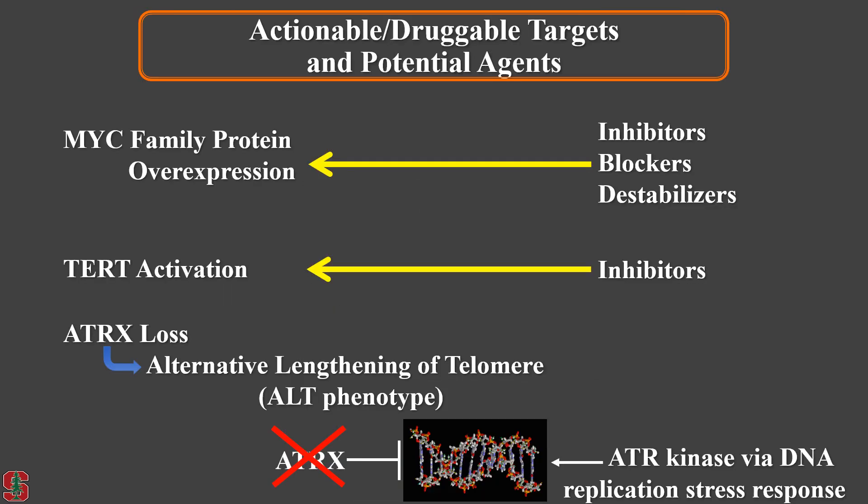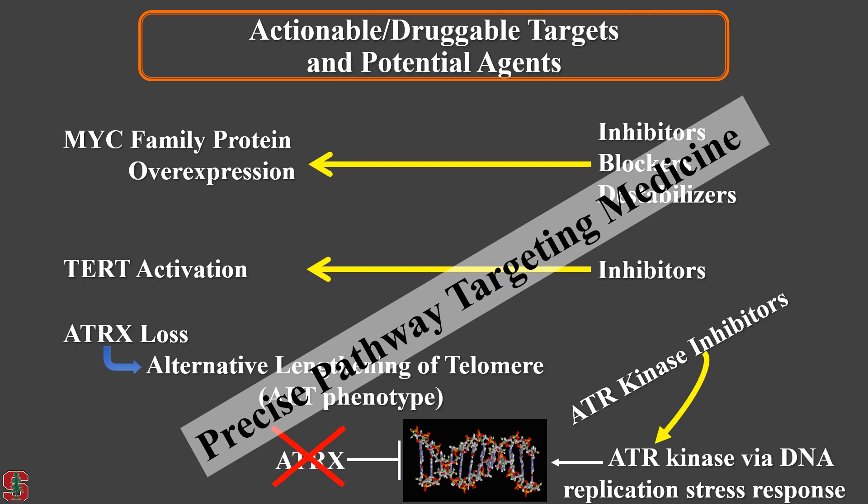We now have three subgroups in the unfavorable histology neuroblastomas, defined by actionable or druggable targets — hopefully. I'm a pathologist, not an oncologist, so I acknowledge it is very tough and difficult to make them real targets. However, there have already been challenges against these targets using inhibitors, blockers, and destabilizers. Since the ALT phenotype is caused by structural gene alterations of the ATRX gene, regaining the protein loss would be very difficult. However, ATR is known as the main player of the ALT phenotype, so ATR inhibitors could be effective. These represent what we call a precision pathway targeting medicine approach.